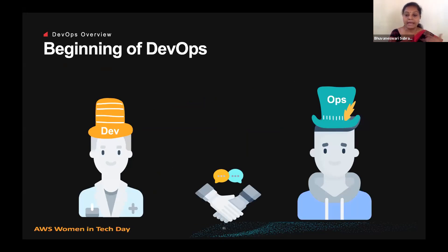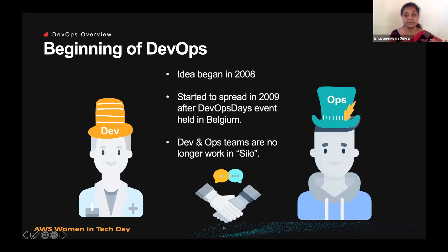With DevOps, the dev and ops teams are no longer working in silos — they work hand in hand to deliver the product. The basic ideation of DevOps began in 2008, and it started to spread widely only in 2009 after DevOps Days was held in Belgium.